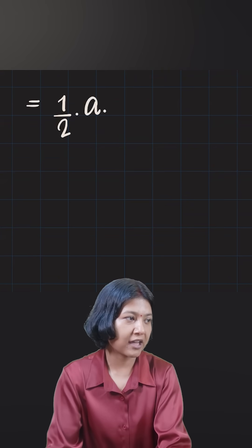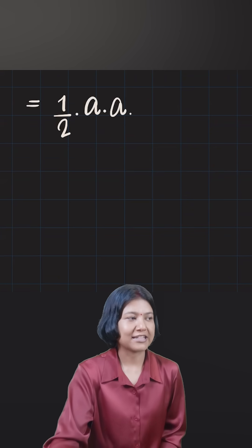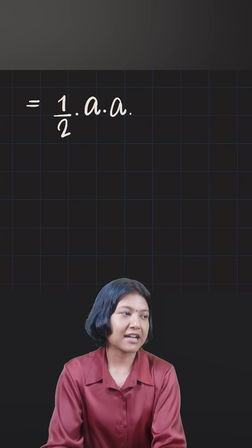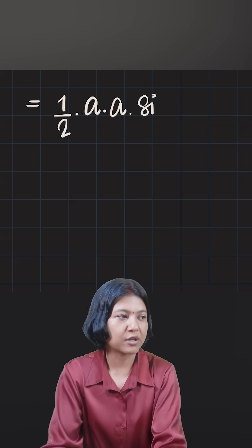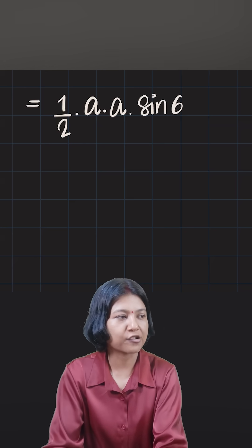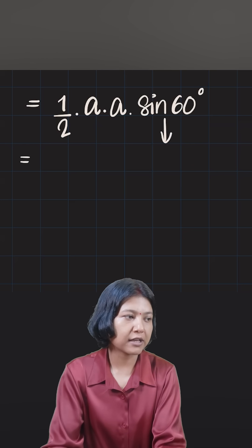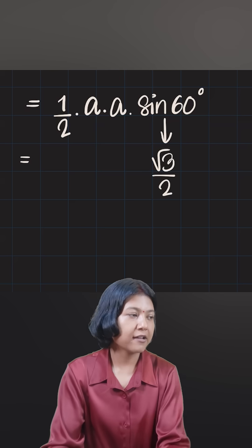Here my sides are both a and a, so I'll keep it just a times a. And now half times the product of the two sides times the sine of angle in between them. So I know that angle here is always 60 degrees. Sine 60 has the value root 3 upon 2.